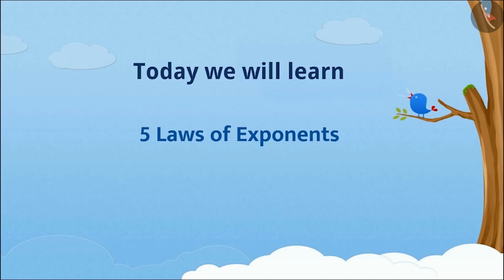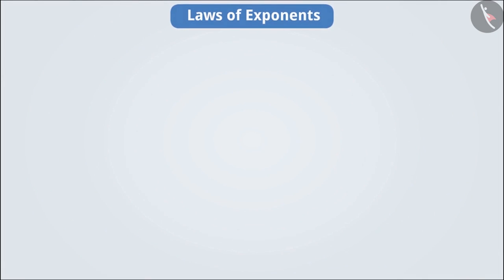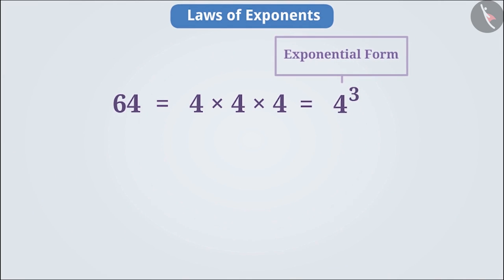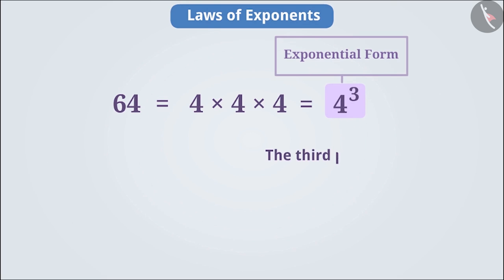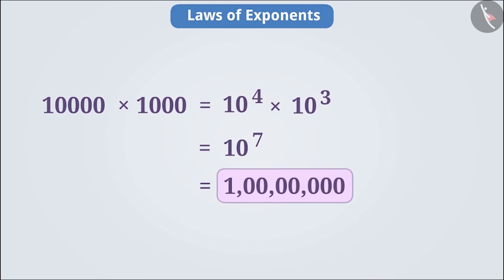Today, we will learn about 5 laws of exponents. In the previous video, we learned that a number such as 64, in its exponential form, can be expressed as 4 to the power of 3, where 4 is the base and the number 3 is the exponent. This form can be read as the third power of 4. By using this form, we can perform big mathematical operations within seconds.